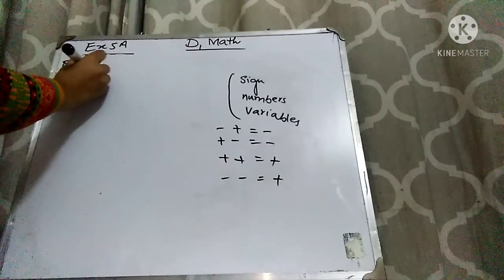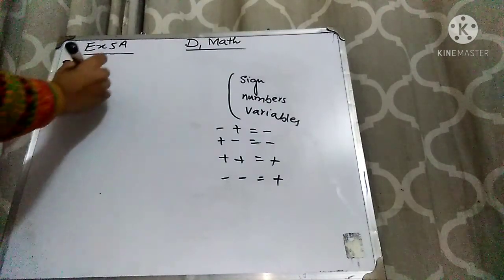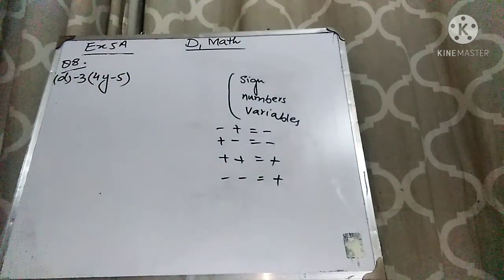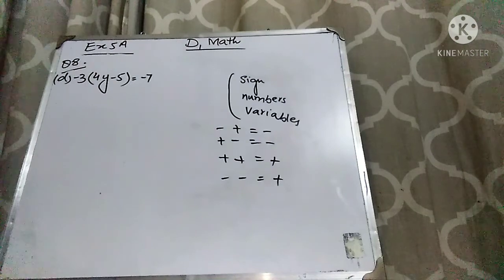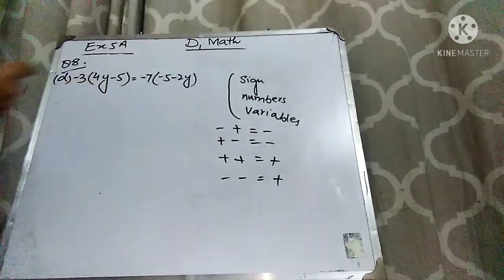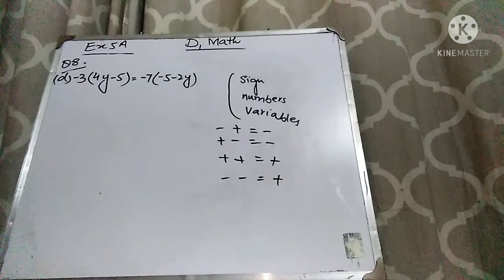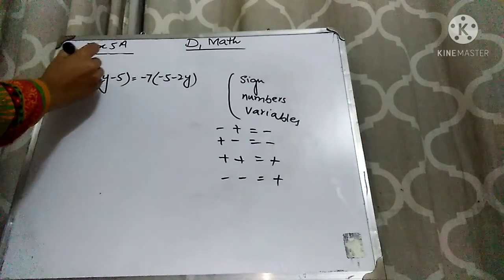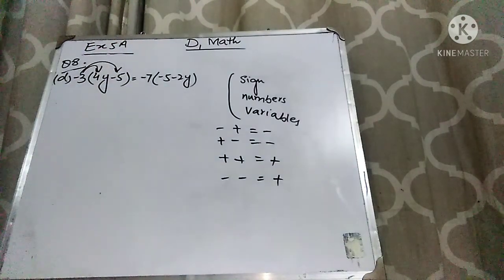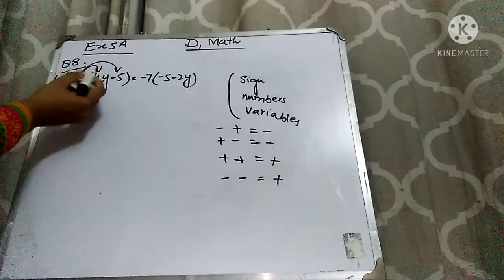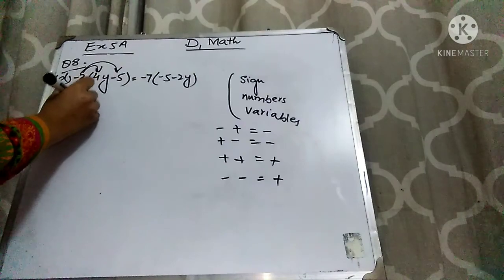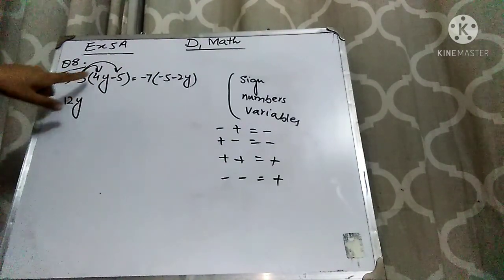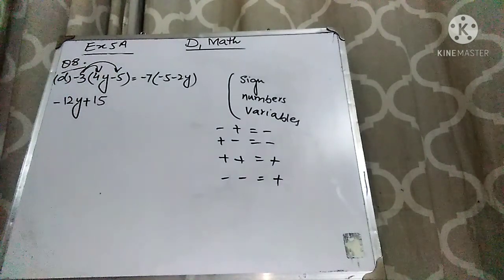Part D is: minus 3(4y minus 5) equals minus 7(5 minus 2y). You need to multiply 3 with this bracket and 7 with this bracket, remembering the rule: first multiply signs, then numbers, then variables. Multiply 3 with 4y: minus plus is minus, 3 fours are 12y. Then 3 with 5: minus minus is plus, 5 threes are 15. Now on the right side: minus minus is plus, 5 sevens are 35 — no variable.